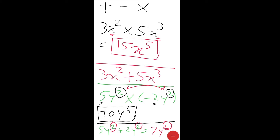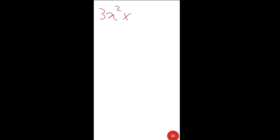The rules for multiplication: first, multiply the coefficients based on the signs of the integers; then add the indices of the same variable. Let us see an example: 3x² multiplied by −7x⁴. Coefficients: 3 × 7 = 21, and plus × minus = minus, so −21. The variable is x, and the index is 2 + 4 = 6.